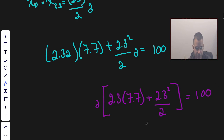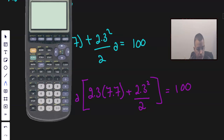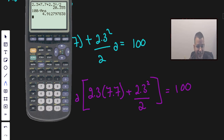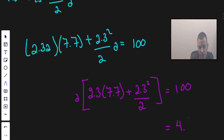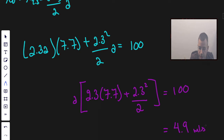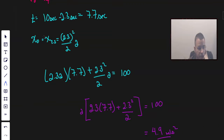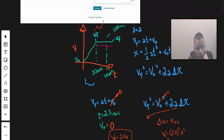Going to the calculator now: 2.3 times 7.7 plus 2.3² over 2, then 100 divided by that result gives us an acceleration of 4.9 meters per second squared. So now we know the acceleration during the first portion — that slope in the graph — is 4.9 m/s².